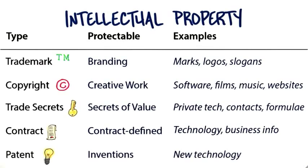The last piece of intellectual property is patent. U.S. patent law has changed in some important ways in the last year, so if you were familiar with it, it's nice to get updated. What's protectable are inventions — typical examples are new technologies. You've invented something new: some hardware, algorithm, software, etc. Getting a patent is kind of important.